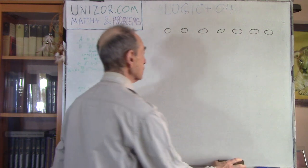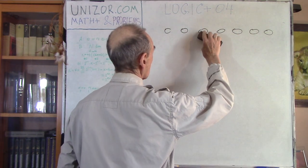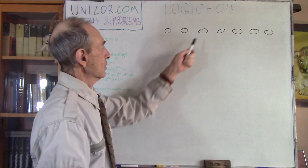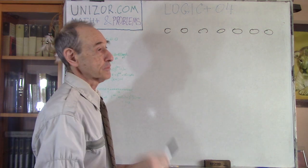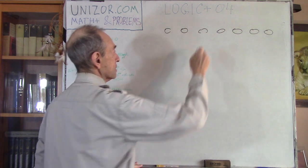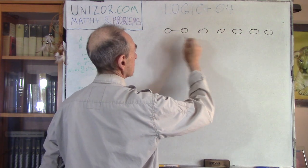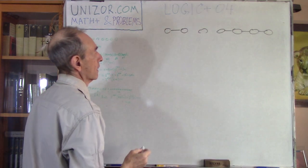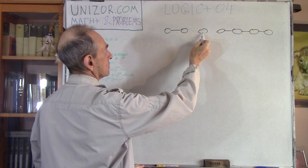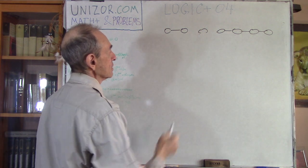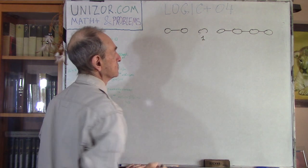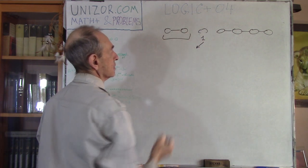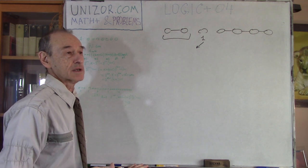The solution is this: if you cut the third link, you will have segments of two, one (cut), and four. For the first dinner you give this one cut link. For the second dinner, you give the two-link segment and take one back. So that would be the second dinner.